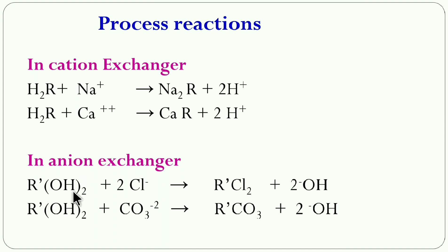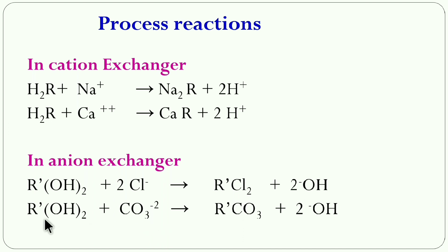For the anion exchanger resin, represented as R'(OH)₂: when Cl⁻ ions are present, they react with R'(OH)₂ to form R'Cl₂ and release OH⁻ ions. Similarly, when CO₃²⁻ (carbonate) ions are present, R'(OH)₂ reacts with CO₃²⁻ to form R'CO₃ and release 2 OH⁻ ions. In this way, OH⁻ ions are released into the water while all anions are captured by the anion exchanger resin.